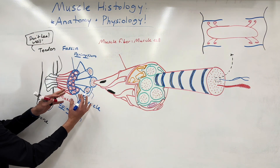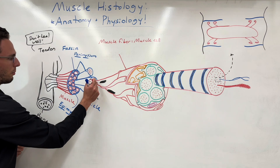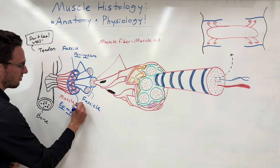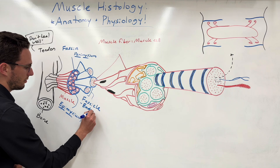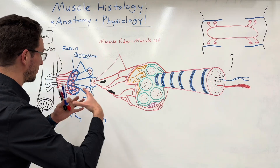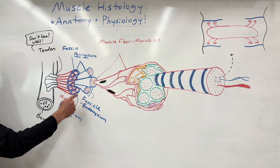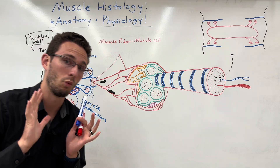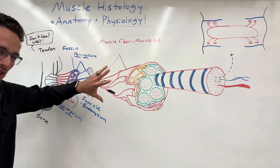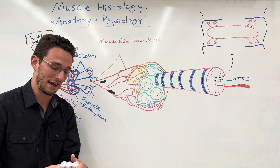Inside each fascicle there are dozens to hundreds of muscle fibers. The fascicle itself is surrounded by something called endomysium, another connective tissue sheath. So in order from outside in: epimysium on the very outside, then perimysium, then endomysium. Now let's look at the muscle tissue that actually contracts — the cells that have contractile units so we can actually move.